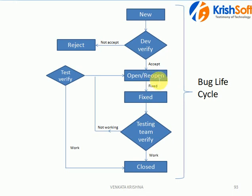When a bug is reopened, the development team needs to work on it again and fix it. Once fixed, we verify again — if everything is working, it gets closed; if not, we reopen it again. This process continues until the bug is closed. In real-time tools, testers log in, search for bugs by status — new, open, fixed — and update statuses accordingly. Both developers and testers monitor the tool to see which bugs are closed or reopened.